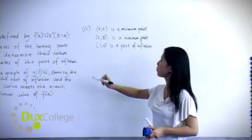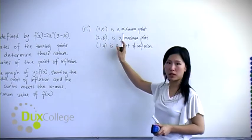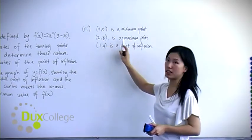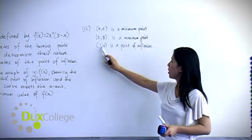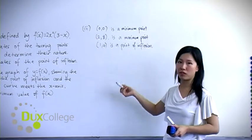Now remember from part 1 that we found (0,0) is a minimum point and (2,8) is a maximum point. And from part 2 we found that (1,4) is a point of inflection.